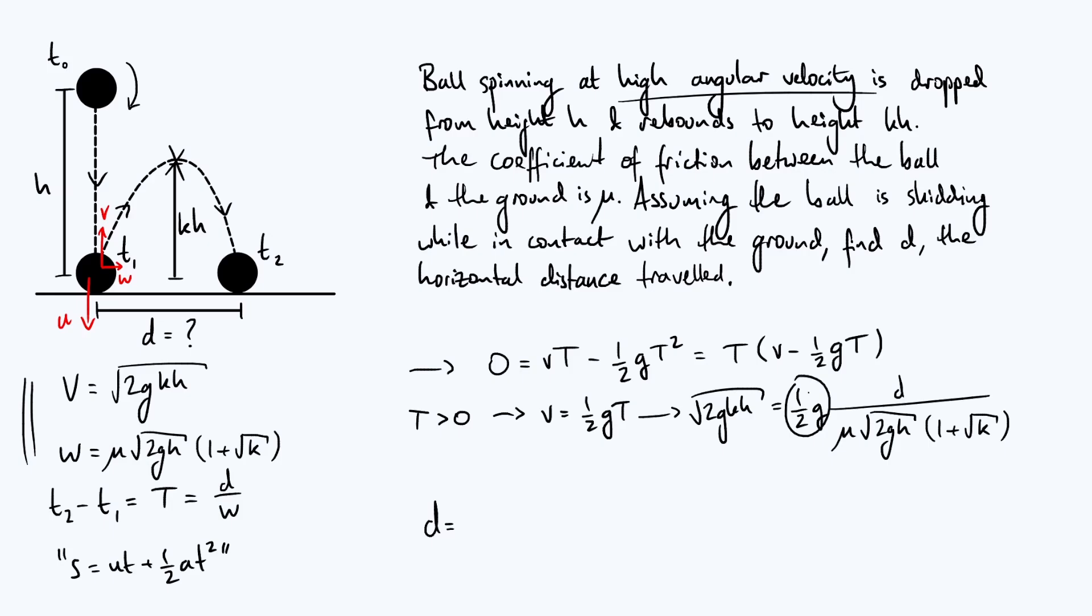So we're going to write down D equals, first thing we are going to do is multiply by 2 over G to remove the G over 2 factor. So let's put 2 over G. Then you're going to multiply by this denominator to move the fraction. So you're going to get a factor of mu. Then some square roots are going to cancel out. You've got root 2GKH multiplied by root 2GH. That's going to turn into 2GH, but the K is still under the square root. And then in the brackets, you've got 1 plus root K. And finally, the Gs cancel and leave you with 4 mu H root K into 1 plus root K.